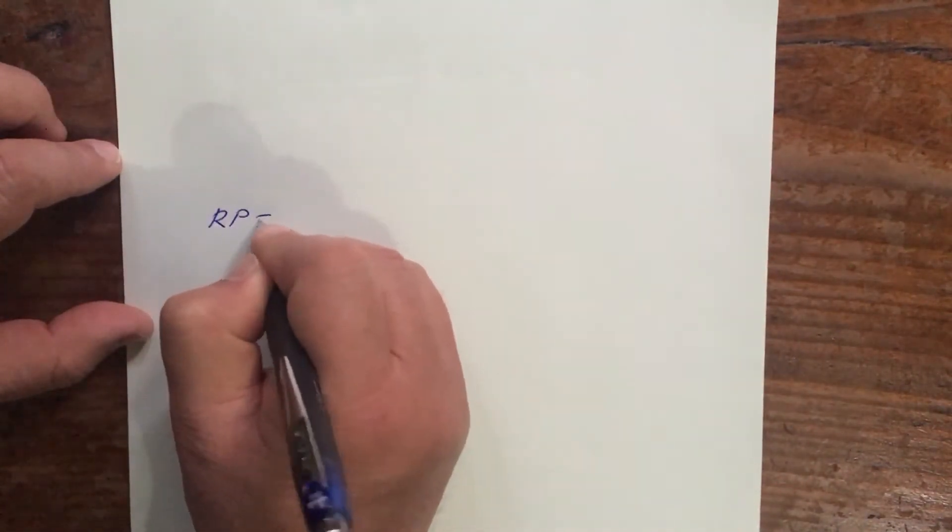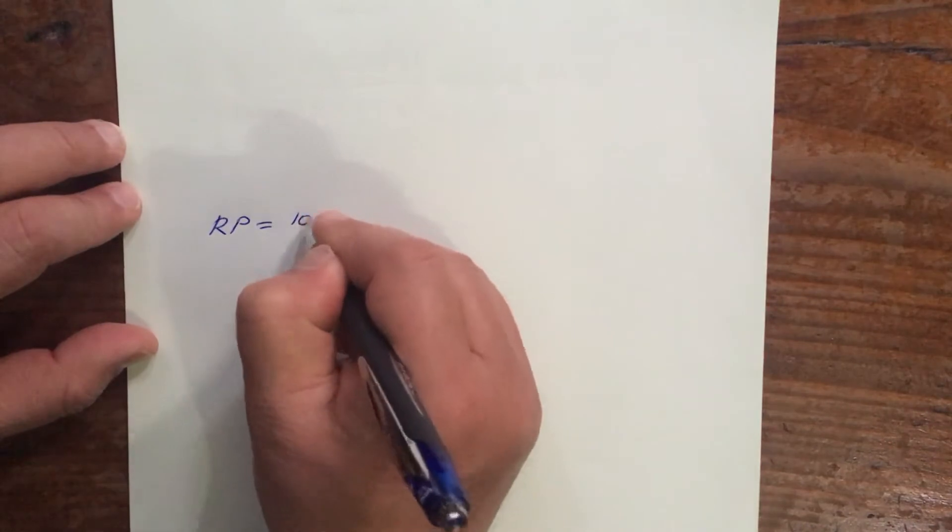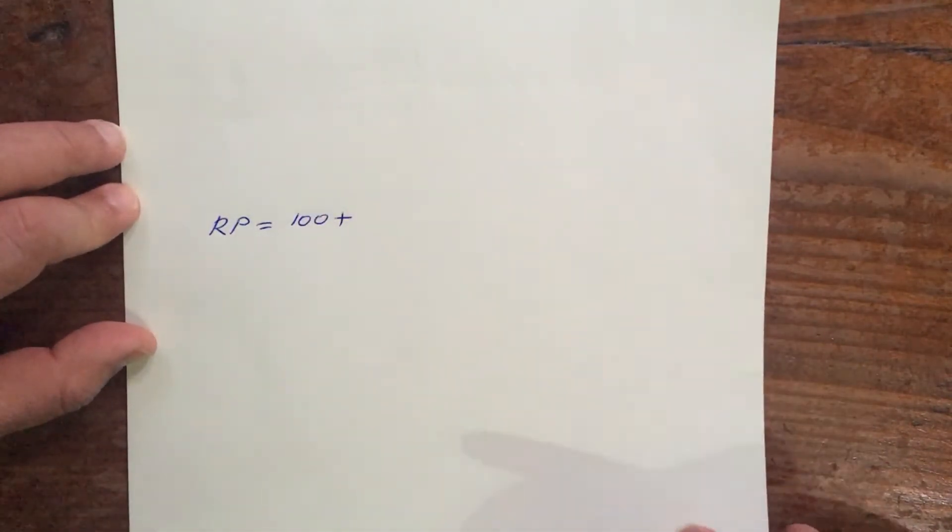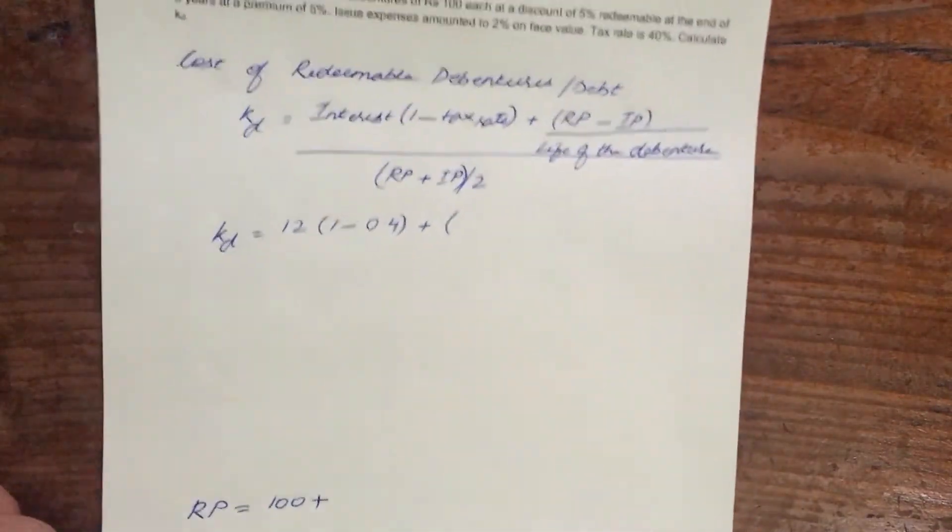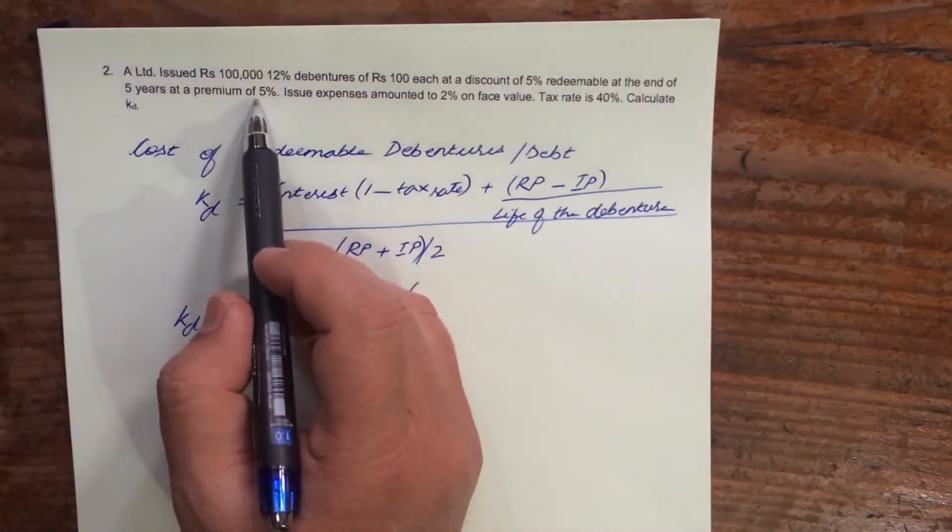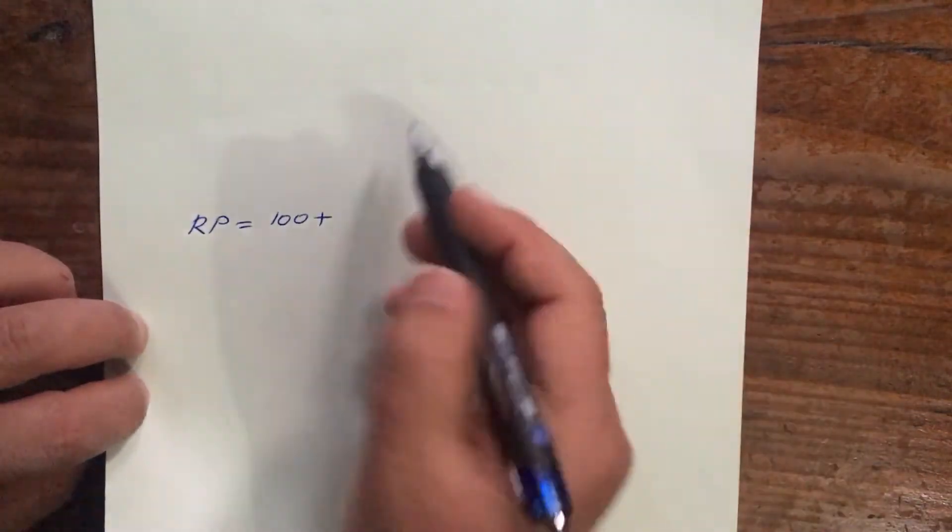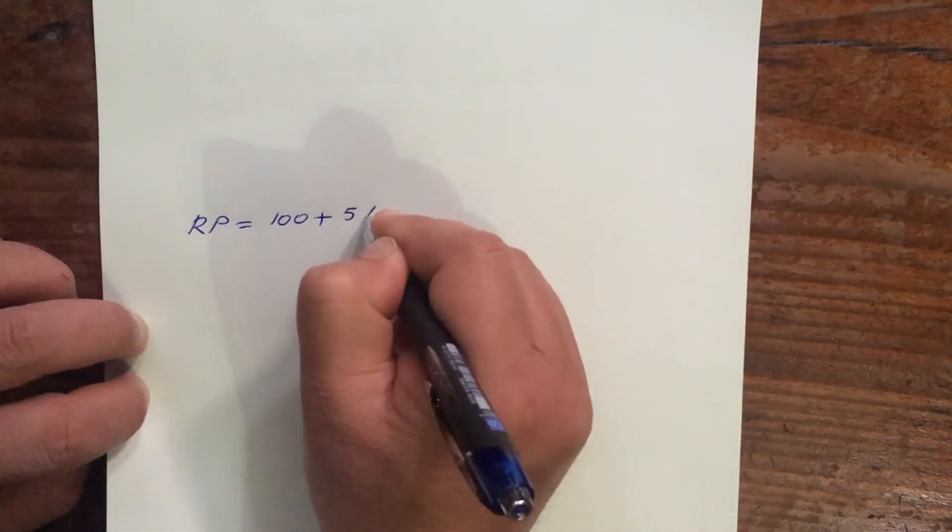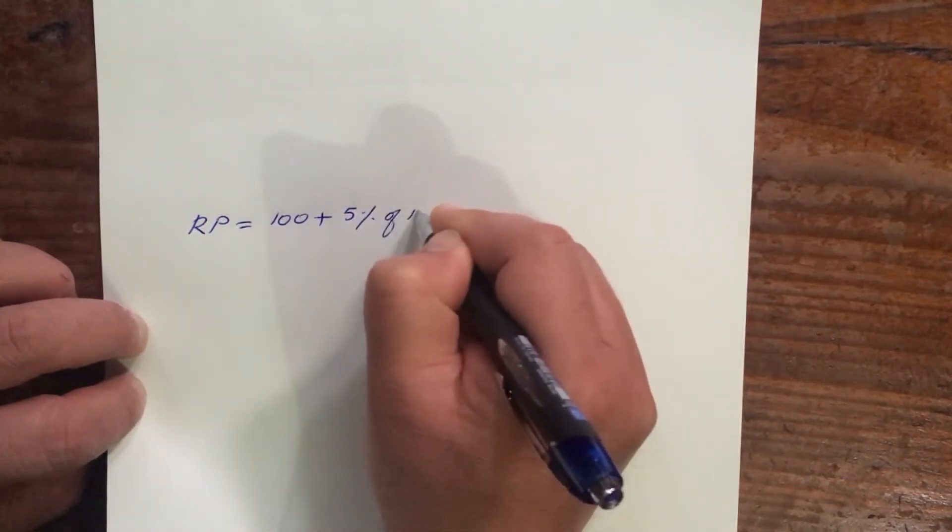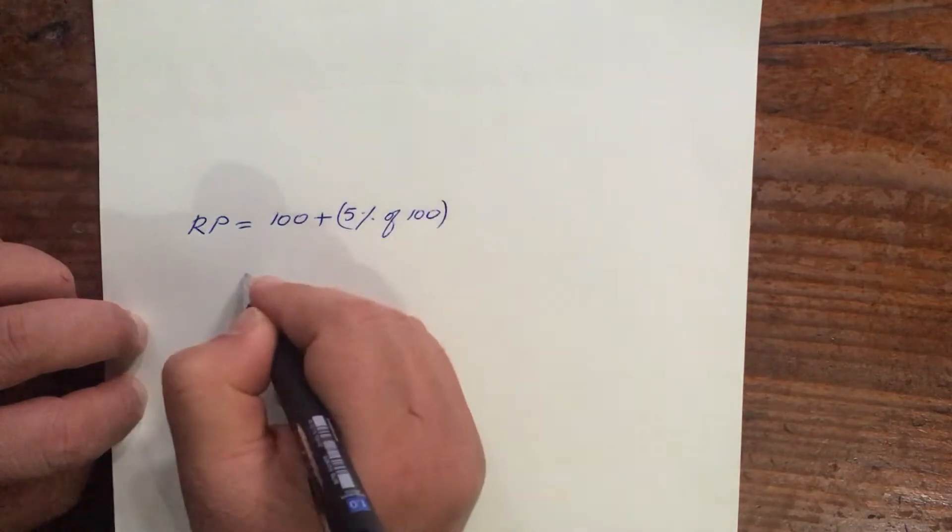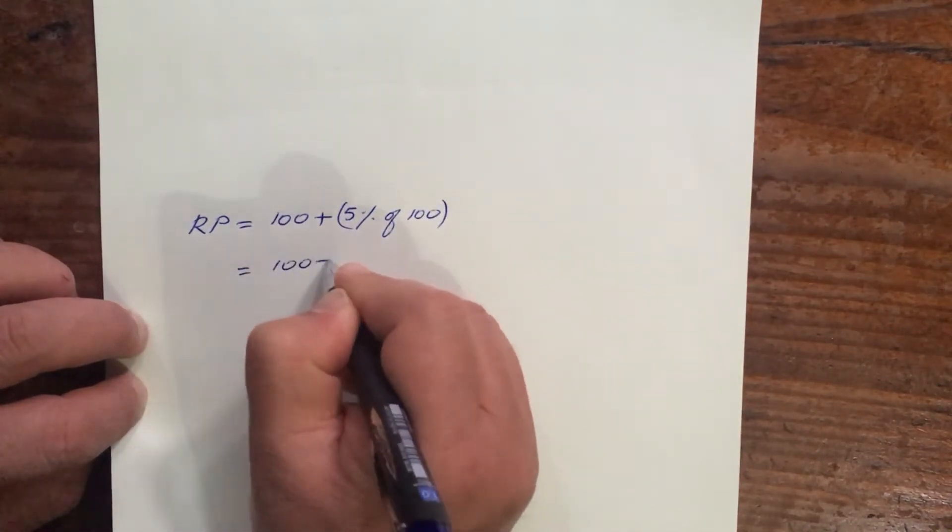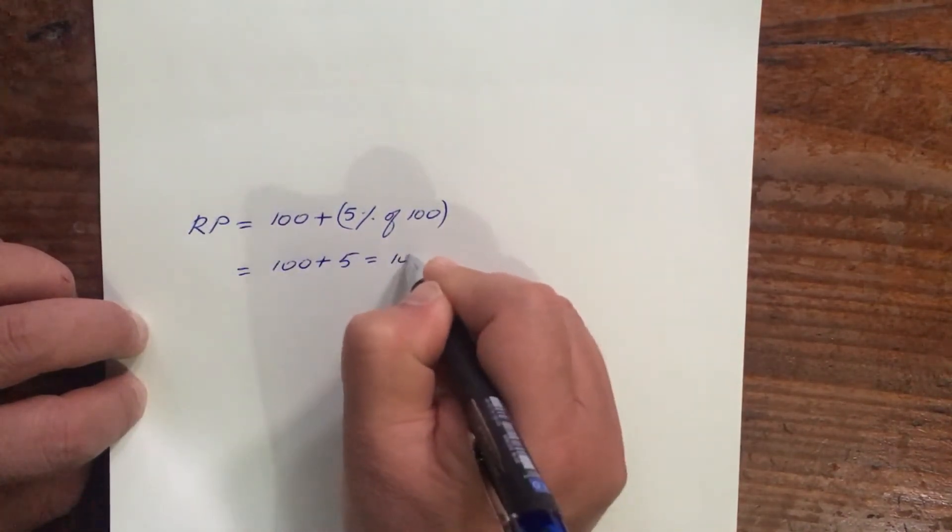So Rp is equal to 100 plus, since it is going to be redeemed at a premium of 5%, 5% on what? Again you calculate 5% on face value. So it will be 5% of 100. So that is 100 plus 5 equal to 105.